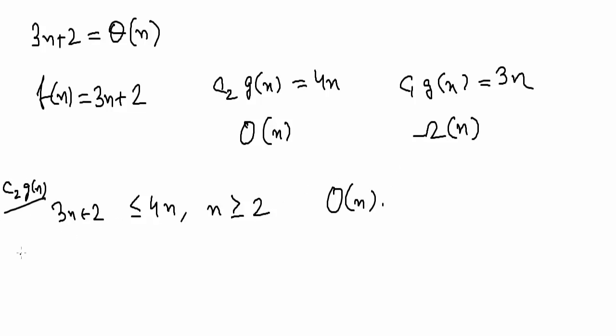Now for c1 g(n), it was something like this: 3n plus 2 was greater than 3n. This is for all n greater than or equal to 1, and so we have already found this out.